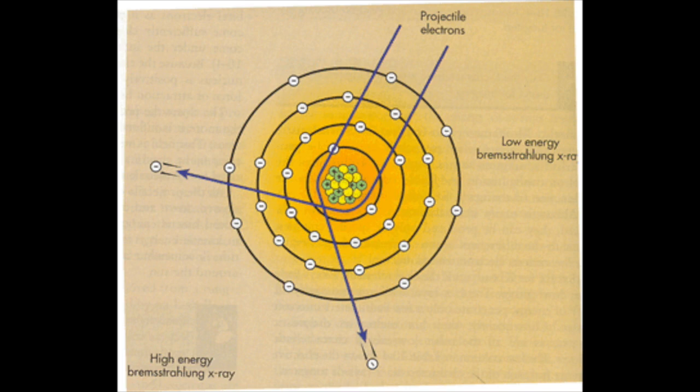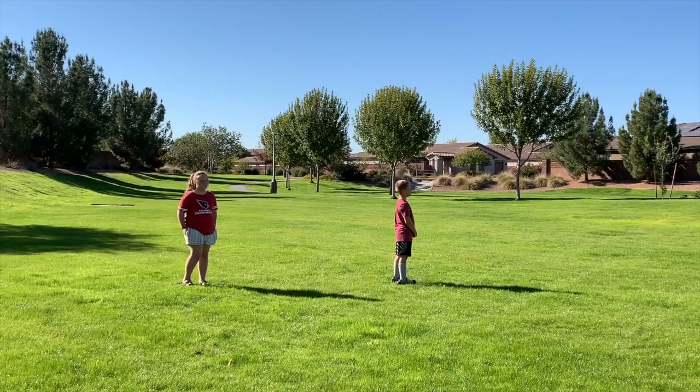Bremsstrahlung interactions occur when the incident electron interacts with the force field of the nucleus. In this example, the girl is the nucleus, the boy in the red is the force field, and the dog is the incident electron.